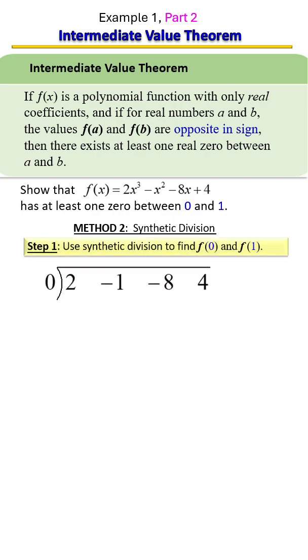We're going to start by bringing down the first term, multiply that with zero to get zero, bring down negative one, multiply that with zero to get zero, bring down negative eight, multiply that with zero to get zero, bring down a four.